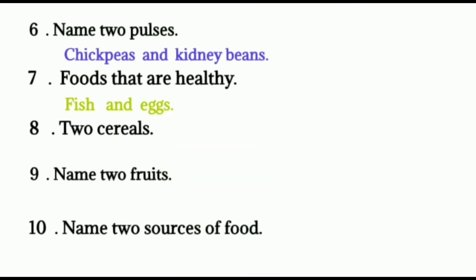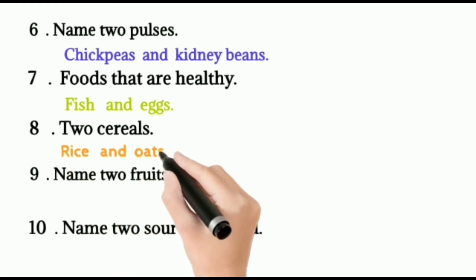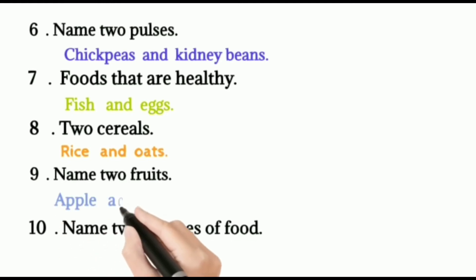Eight, two cereals. Cereals are rice, wheat, oats, maize, barley, etc. Here rice and oats. Name two fruits. You can write any two. Apple, mango, pineapple, anyone.